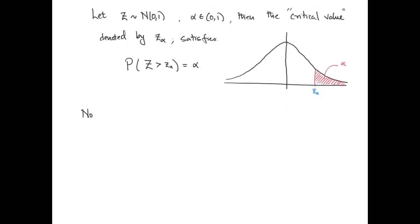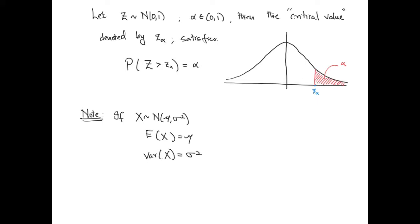If a random variable X satisfies the normal distribution with parameters mu and sigma squared, then the expected value of X is exactly mu, the variance of X is sigma squared, and the standard deviation of X is sigma.